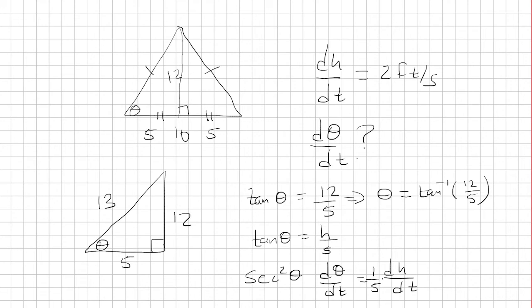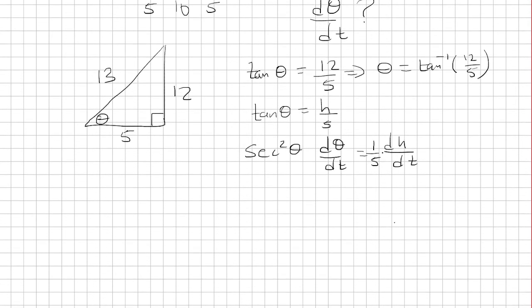Now, we know dh/dt is 2. And theta we found out was inverse tangent of 12 over 5. So we're going to have secant squared of inverse tangent 12 over 5, dθ/dt is what we want to find out, and then dh/dt is 2.